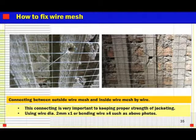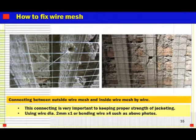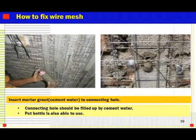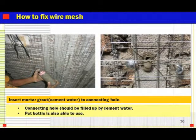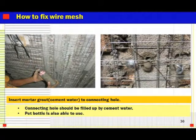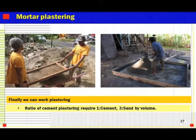The connection is made using wire. If using 2mm diameter wire, just one is needed. But if using bending wire, typically four bending wires are used, as shown in the photo above. Then insert mortar grout — like cement water — into the connecting holes. The connecting holes should be filled up with cement water. A bottle or PET bottle can be used for filling this cement water.